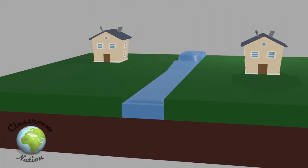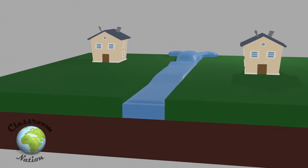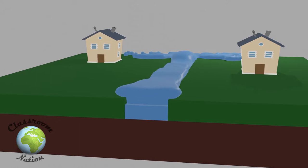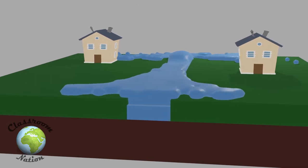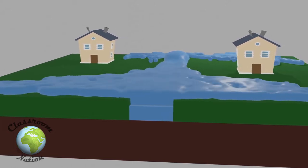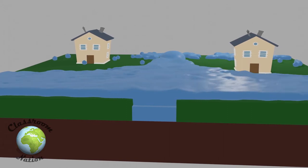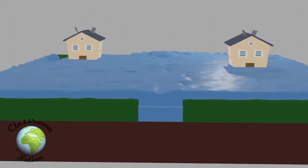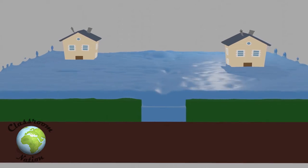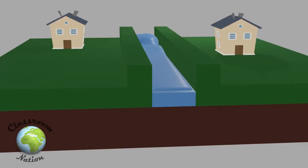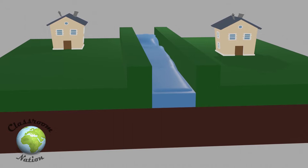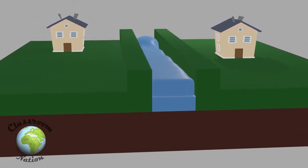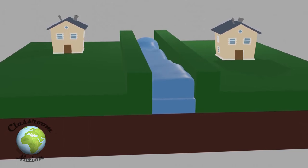In our first animation, you can see the river floods easily on both banks, causing damage equally on both sides. In our second clip, we have built levees on both sides of the river and they have managed to hold back the water and prevent flooding.